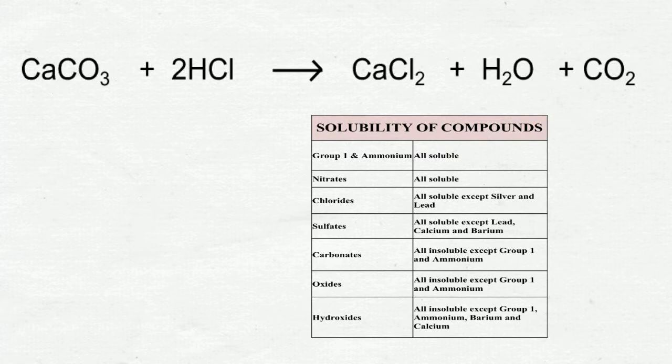Let's look at the first substance in the equation. Calcium carbonates. We check through the table. Carbonates. All insoluble except group 1 and ammonium. Since calcium is in group 2, we have a group 2 metal carbonate. Therefore, it's insoluble.